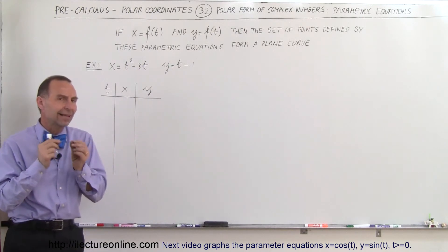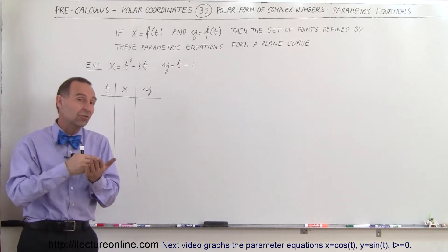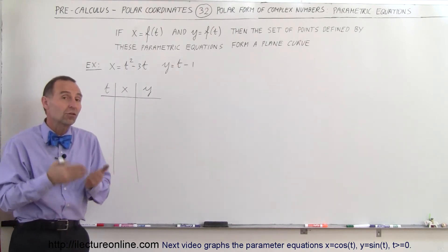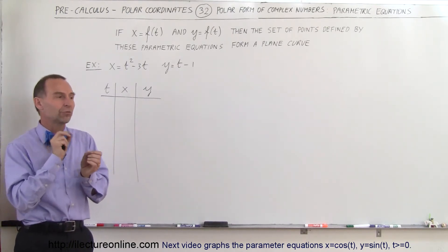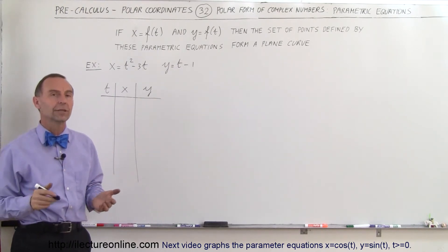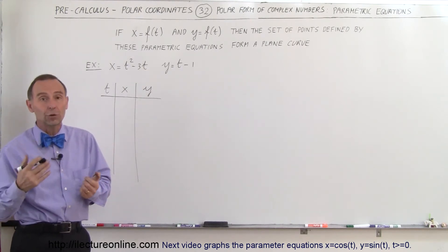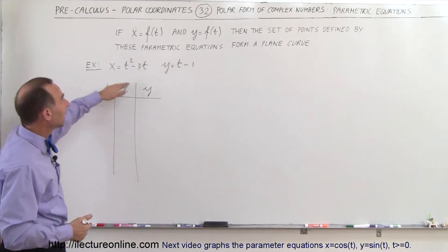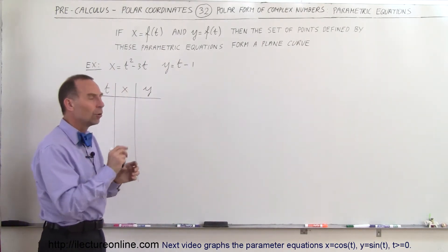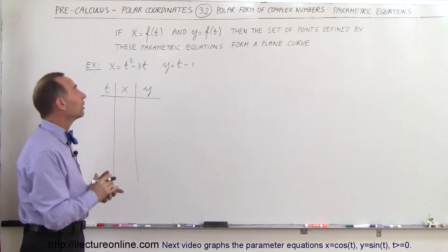And let's say that t represents time, which means that the position of the particle in the x direction is determined by time and the position of the particle in the y direction is determined by time. So at any point in time, we should be able to figure out the x and y coordinate of the position of a particle. When we add all those points together, those points will make a curve and that curve is called a plane curve. So all the points defined by these two parametric equations form a plane curve.